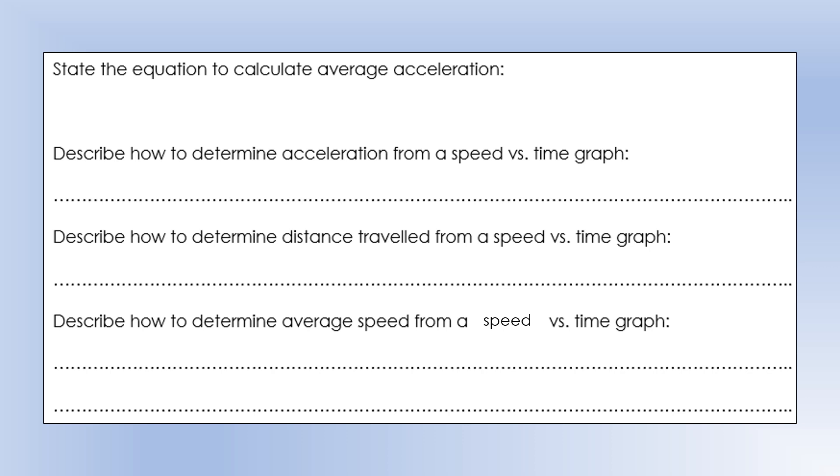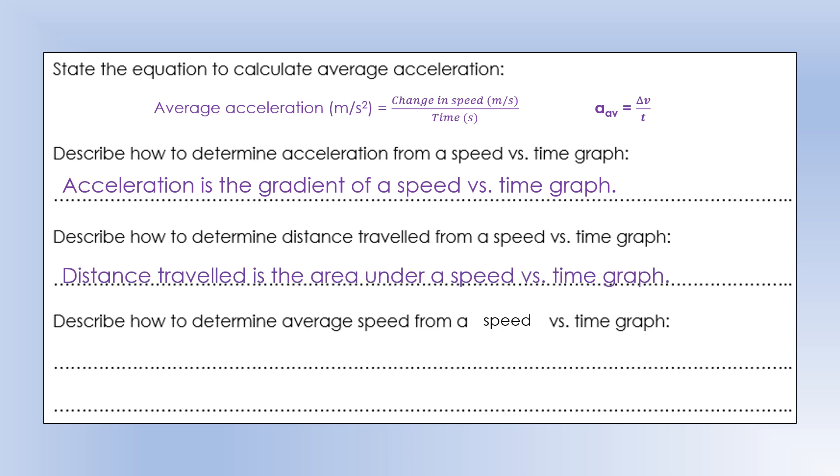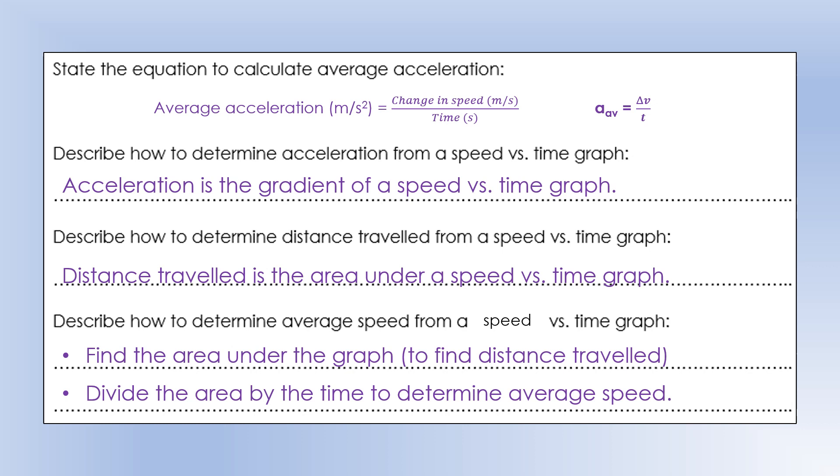State the equation to calculate average acceleration. It's change in speed divided by time, or you sometimes see that as delta V over T. Describe how to determine acceleration from a speed versus time graph. It's the gradient of a speed versus time graph. Distance travelled would be the area under the speed versus time graph. To determine average speed, we would find the area under the graph that gives you the distance travelled, and then you divide the area by the time.